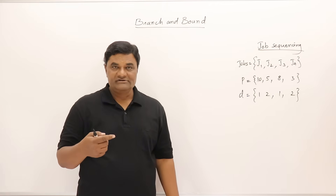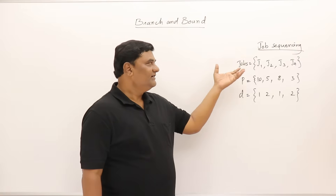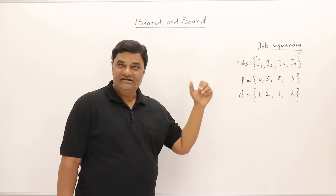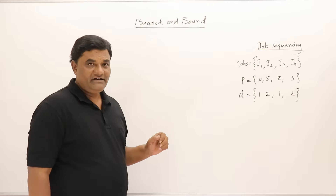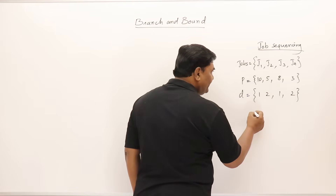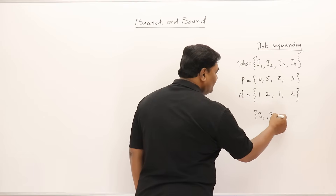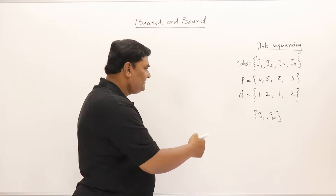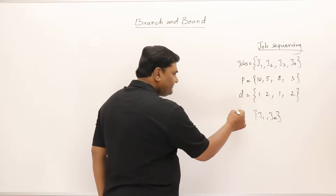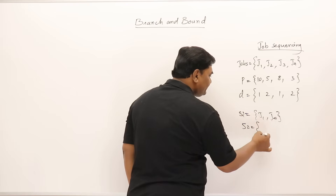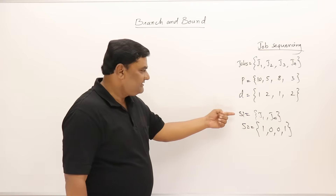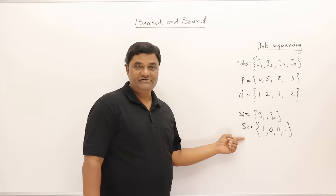Let me show you how it works. I have taken one simple example: job sequencing with deadlines. There are two methods of generating a state space tree depending on how you want the solution. One method is to represent the solution as a subset of jobs — for example, doing job 1 and job 4. The second method uses a fixed-size representation where each job is marked as done (1) or not done (0).